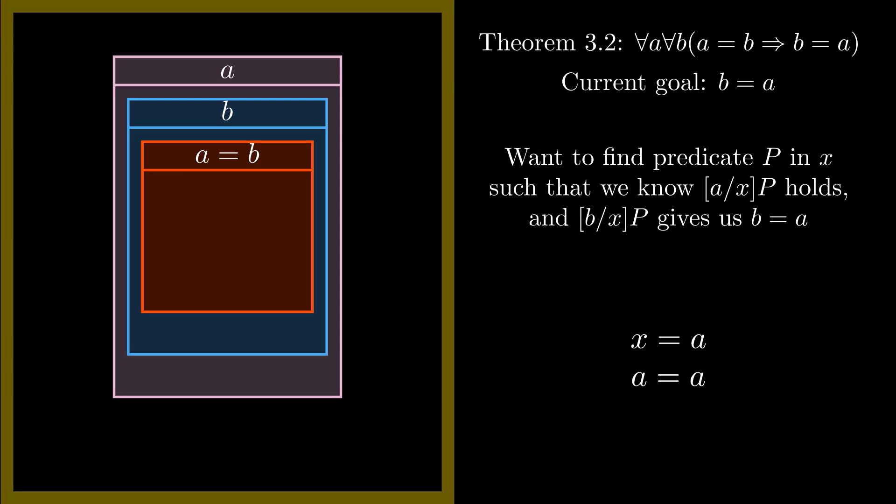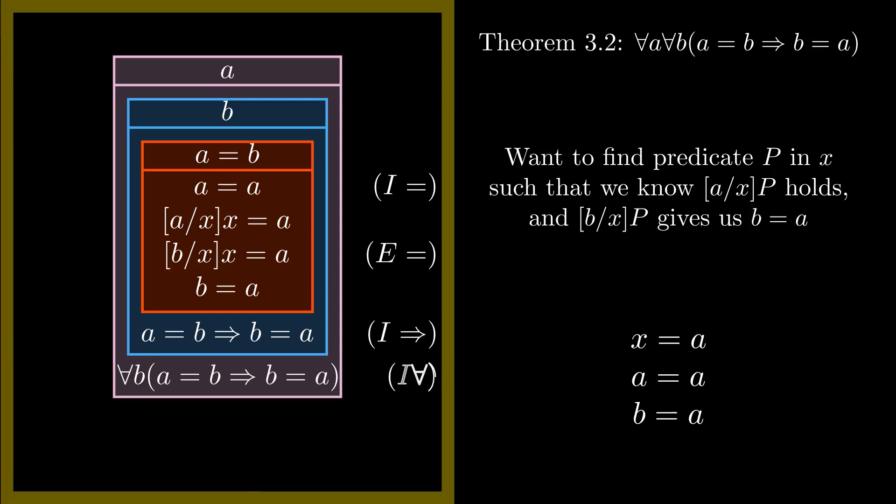a is introduced, so we don't count it in the variables of this predicate. When we replace x with a, we get a equals a, which we can show holds using the introduction rule for equality. And when we instead replace x with b, we get b equals a, which is the statement we want to prove. Now that we've figured out what we want to do, let's do it on the proof side. We use the introduction rule for equality to get a equals a, which we can rewrite as the substitution of a for x in x equals a. Then we apply the elimination rule to get the substitution of b for x in x equals a, which is b equals a. Now we can take it out of this box by appending a equals b implies in front, then take it out of this next box by appending for all b in front, and finally take it out of this last box by appending for all a in front. This finally gives us the statement we wish to prove, so we can now draw a little box and say QED.